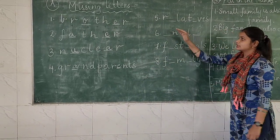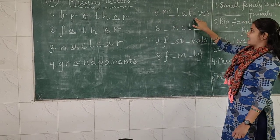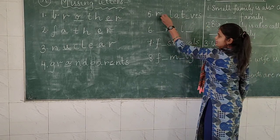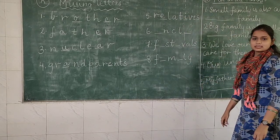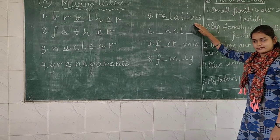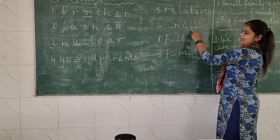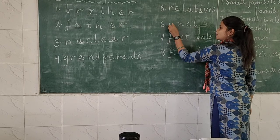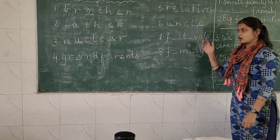Now the fifth word: R-dash-N-A-T-dash-V-dash-S. This word is 'relatives'. The correct spelling is R-E-L-A-T-I-V-E-S. The sixth word: dash-N-C-L-dash. Very easy — this is 'uncle'. The correct spelling is U-N-C-L-E.